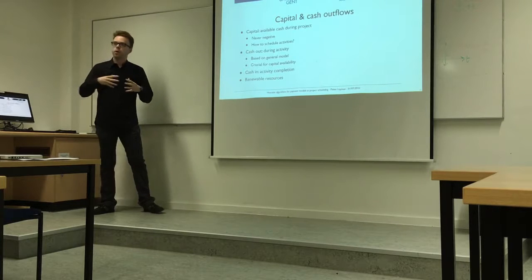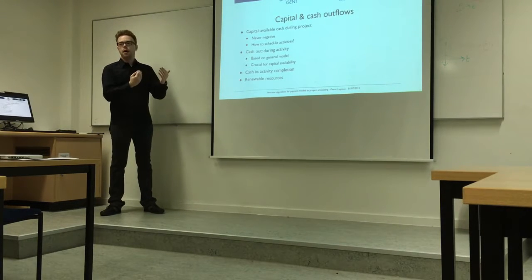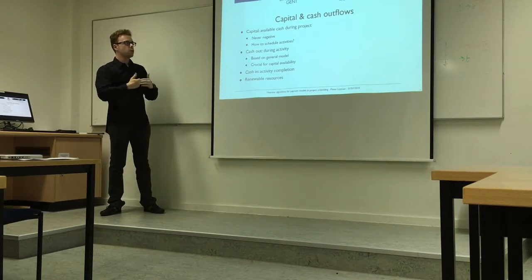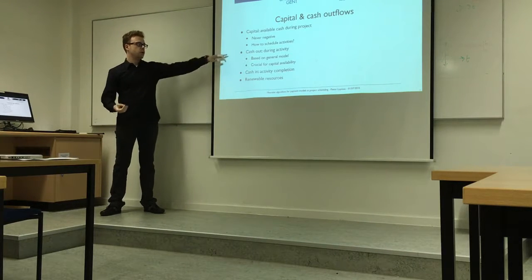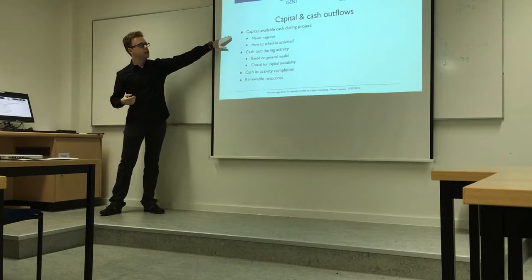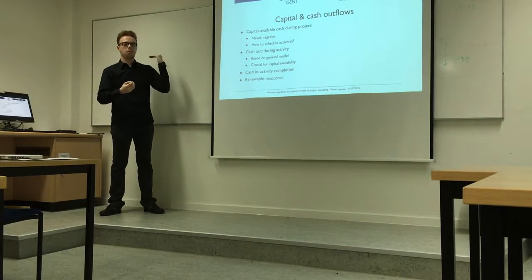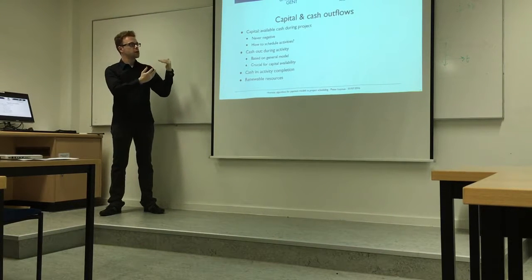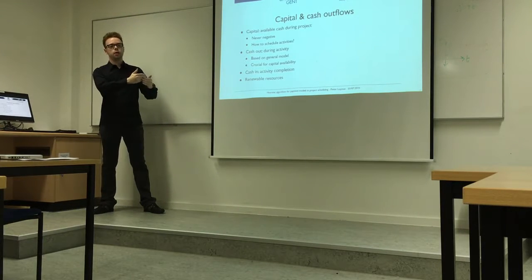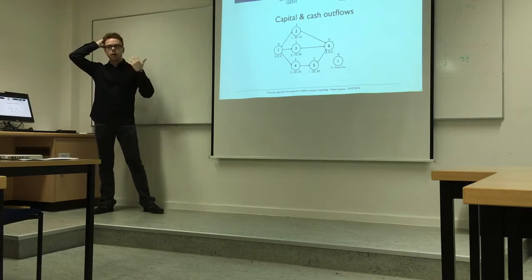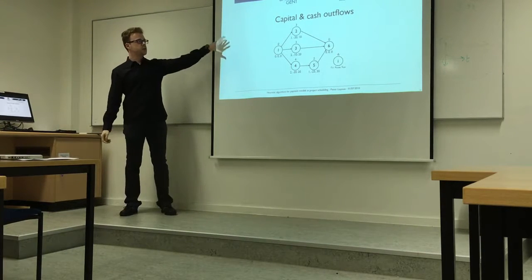The next chapter takes a step back from timing and size of cash inflows — assuming they occur at each activity's finish time — and focuses on how cash outflows are managed and the impact of including capital availability. For example, a project starts with 100,000 euros of capital; this decreases based on cash outflows and increases based on cash inflows, with a typical time lag between outflows and inflows based on activity durations.